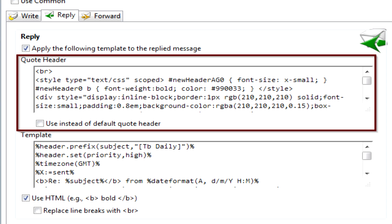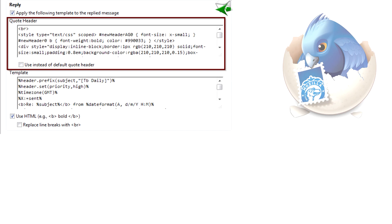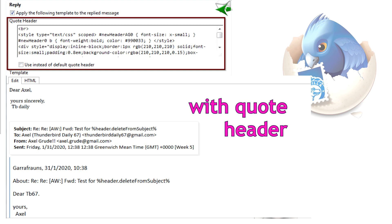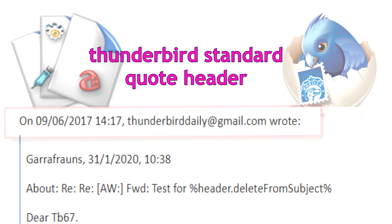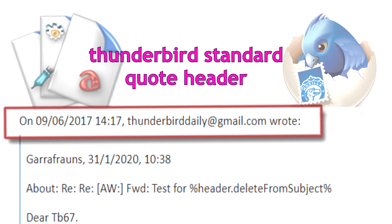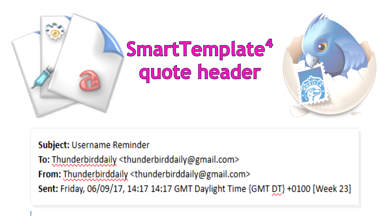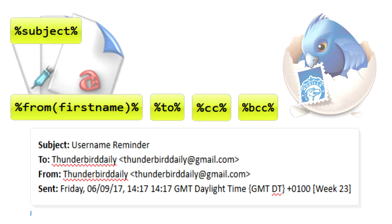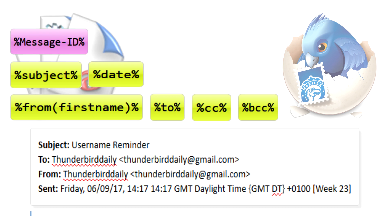In the Reply and Forward cases, there is an extra field called Quote Header. This can be used to replace the somewhat terse info line above each quoted mail, which normally says something like: on the 9th of June 2017, at 2:17, ThunderbirdDaily at Gmail wrote. Instead, you can make this a quite well-designed part with lots of additional information. Essentially, you are able to extract any mail header from the mail you reply to or forward.